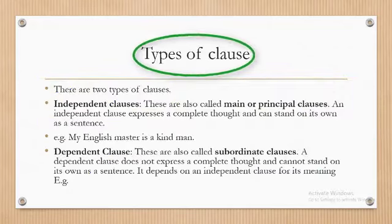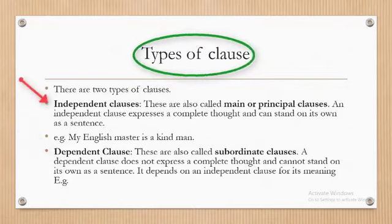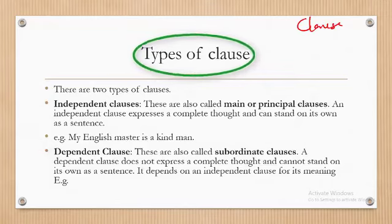There are two main types of clauses in the English language. We have the main clause and the subordinate clause — also called the independent clause and the dependent clause. So clauses can be divided into two: main clause and subordinate clause.